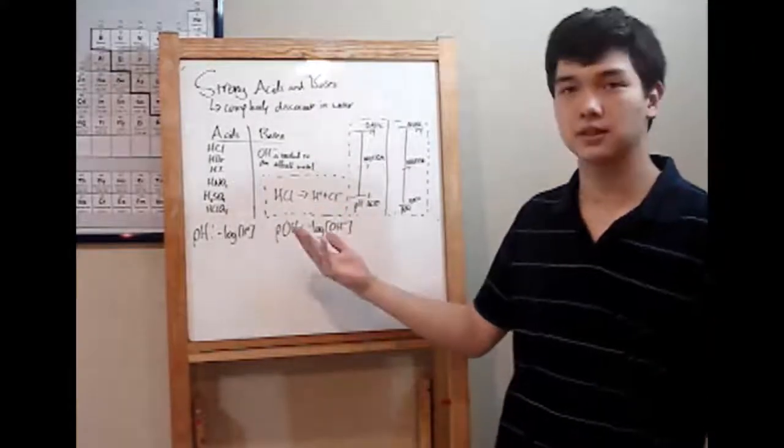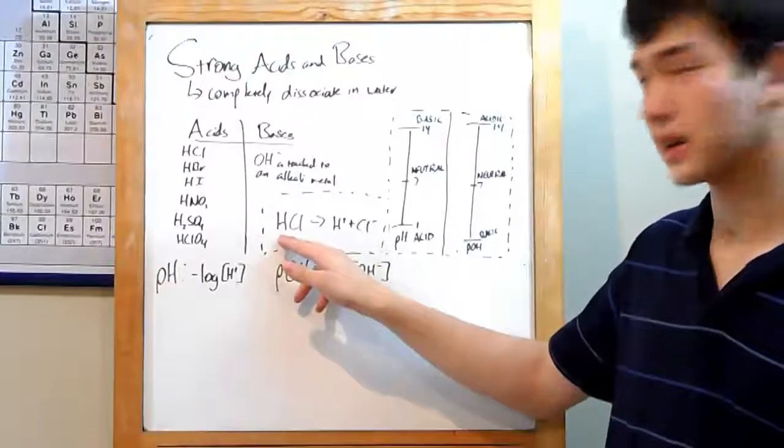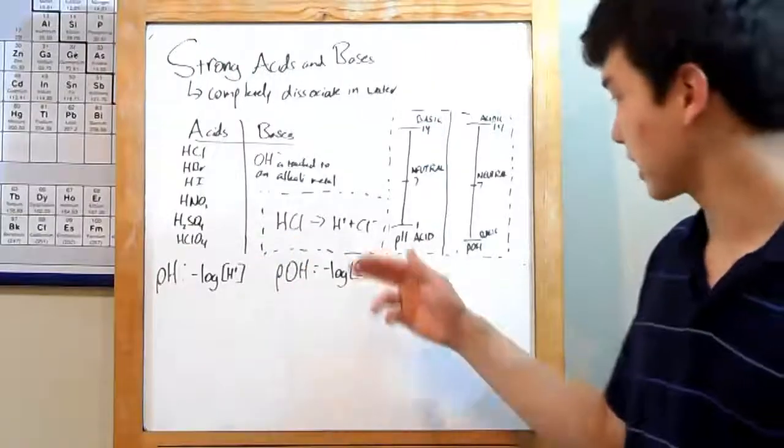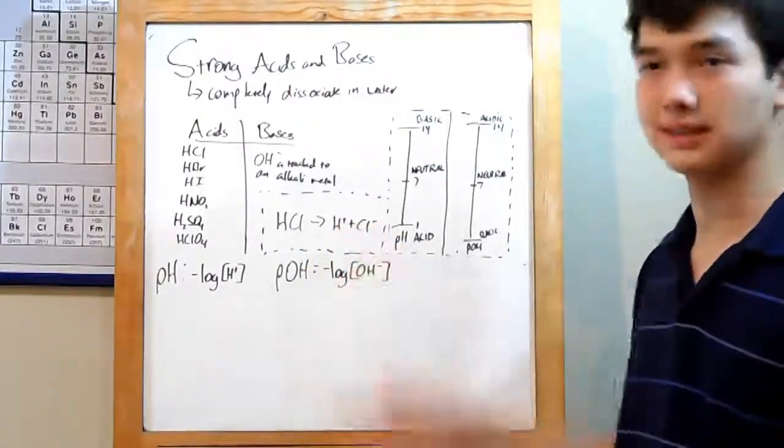Basically what happens is you put down your strong acid, like hydrochloric acid, and it will completely break off into its ions, H+ and Cl-.